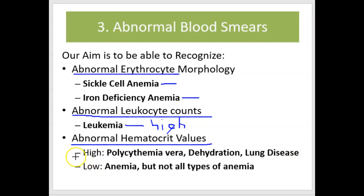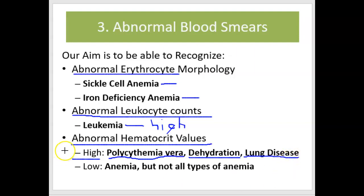We'll see examples of high hematocrit with the following conditions. There's a disease called polycythemia vera in which the bone marrow reproduces very high numbers of red blood cells. In dehydration, there's a higher proportion of red blood cells versus plasma. And in lung disease, red blood cell production often goes up to try to compensate for the lack of oxygen coming from the lungs. All of these conditions will produce high hematocrits.